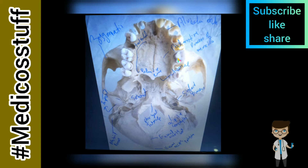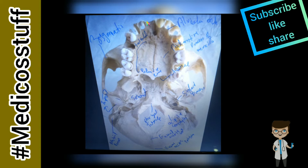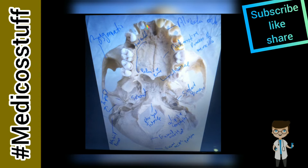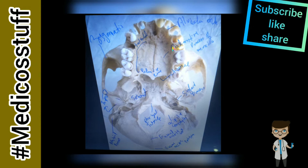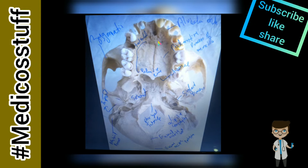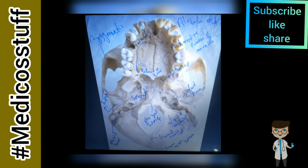You can see the Norma Basalis. This part, this arch, is known as the alveolar arch. You can see the cursor moving on the alveolar arch, in which there are teeth and teeth sockets. This whole part is known as the hard palate.